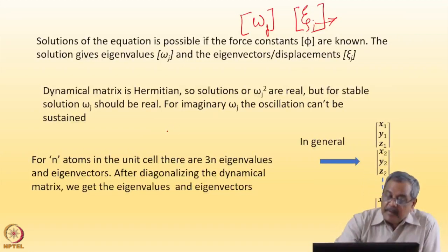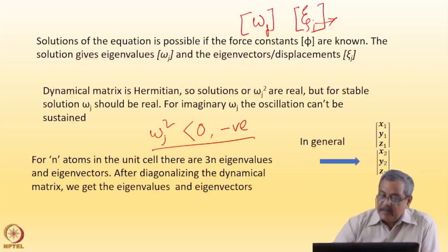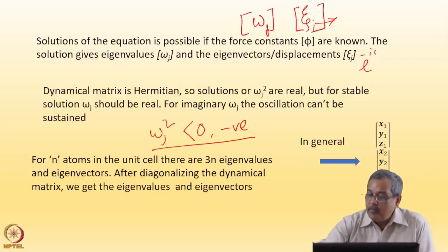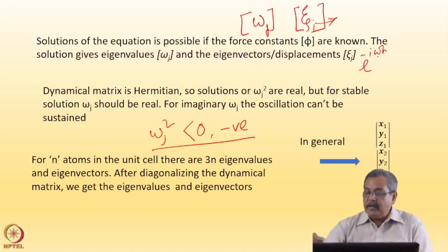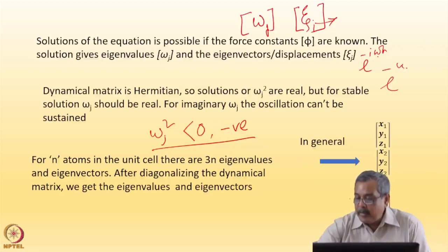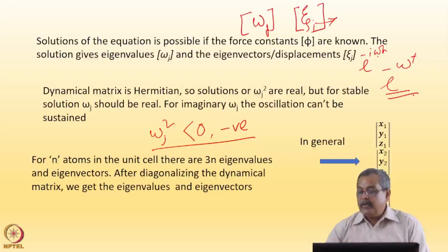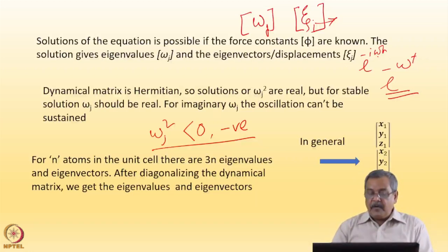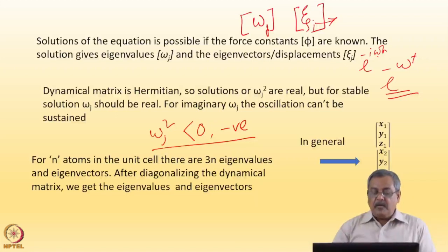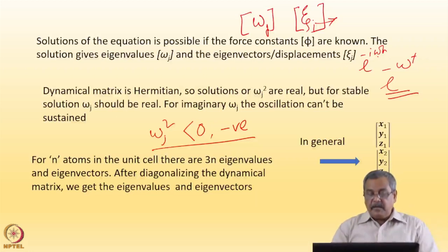Real does not mean positive. If ω_j² is less than zero or negative, then you have e to the power minus i·ω·t, and then ω will be imaginary, giving e to the power minus ω·t. Such a phonon would decay with time, so for imaginary ω_j, the oscillations can't be sustained. For solutions that are valid phonons — quantized oscillations of atoms in a crystalline solid — ω² should be greater than zero. Imaginary ω_j values will decay and cannot be sustained in the system.